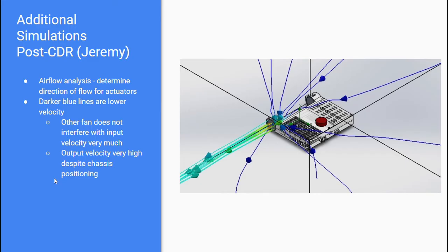Additionally, we conducted some simulations post-CDR. The first simulation we conducted was an airflow analysis to determine if the direction of flow was interrupted by the chassis or the other actuator. We determined that the lines of velocity only increased near the inlet of the fan, meaning that the actuator placement and the chassis size has negligible effect on the air velocity of the fan. The output velocity of the air is very high, as you can see with the lighter horizontal lines coming out of the actuator, showing that the fan is capable of providing high thrust in this orientation.